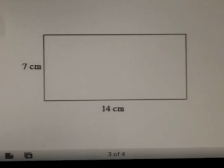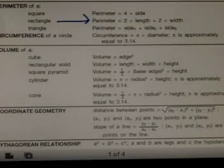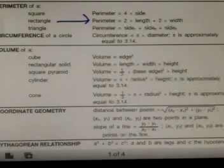Here is a rectangle, and if it is 7 centimeters on this side, it's 7 centimeters over here. And if it's 14 centimeters on the bottom, it is 14 centimeters on the top. So what they're asking us to do on the formula is take 2 times length plus 2 times width. Let's go do that.